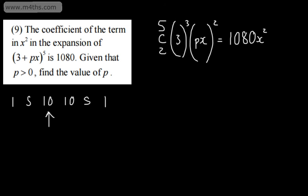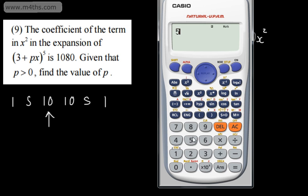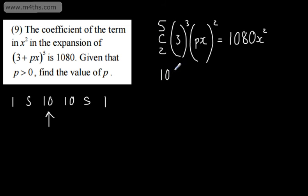Again, if you want to find that on a calculator, just type in 5C2 and that will give us the 10. So let's go ahead and write that. That is going to be 10 and then we're going to have multiplied by 3 to the power of 3 which is going to be 27. And then we're going to have p squared which is going to be equal to 1080.